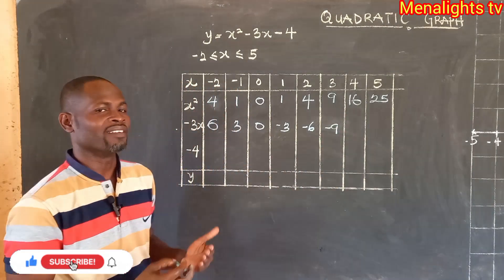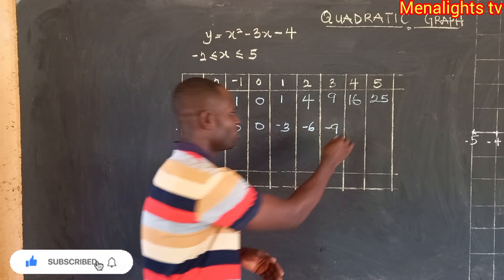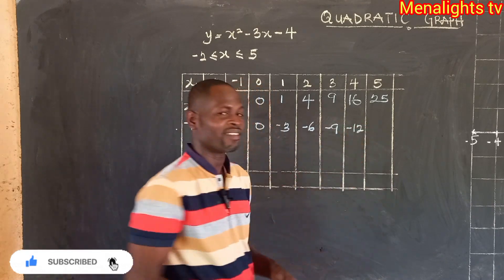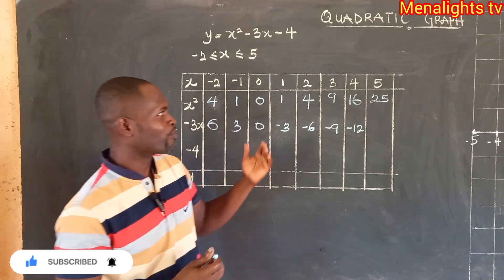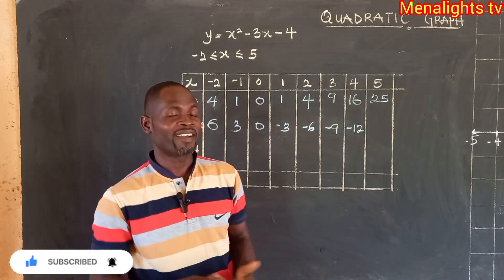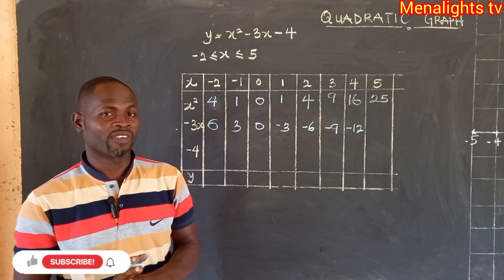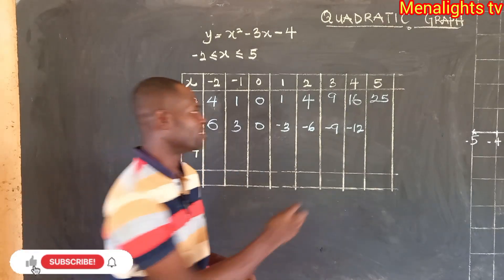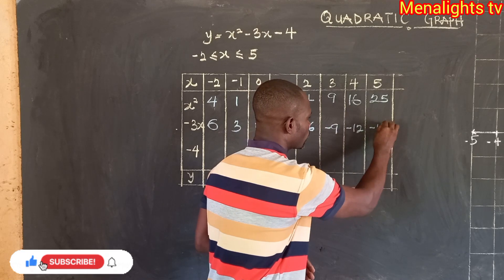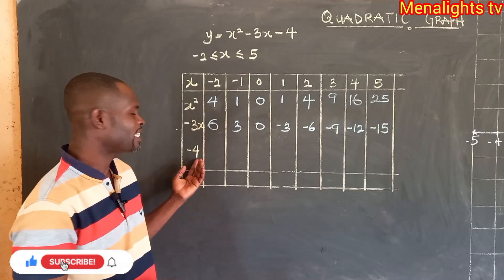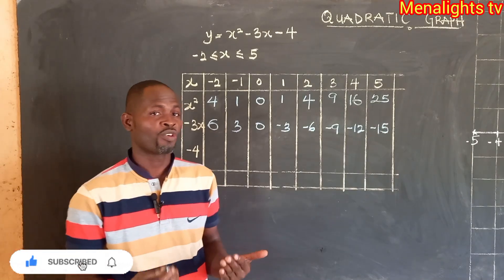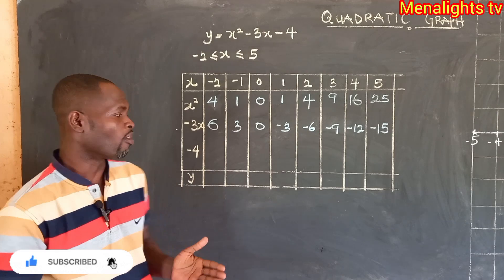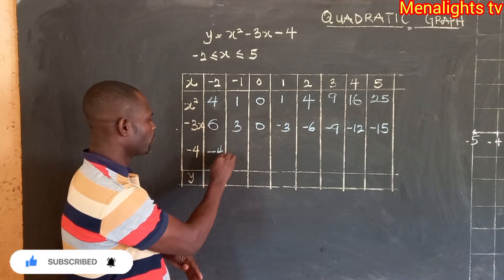Then 4 times negative 3 gives us negative 12. Then 5 times negative 3 gives negative 15. The negative 4 is a constant, so we are going to repeat negative 4 throughout.